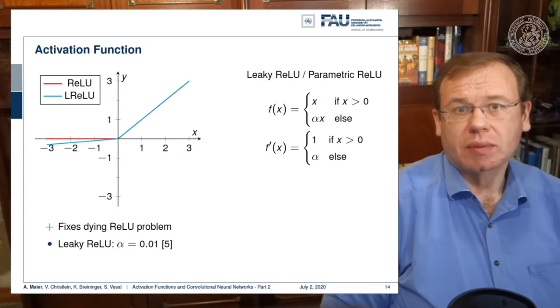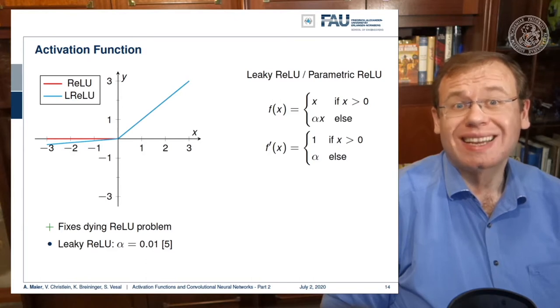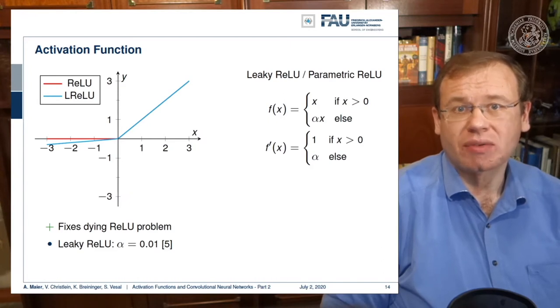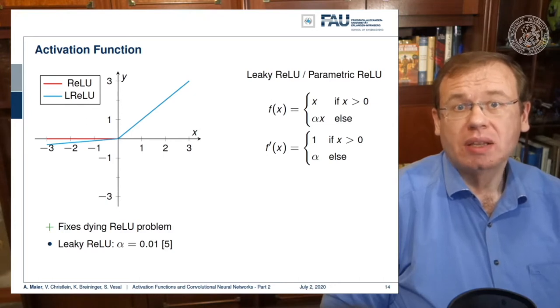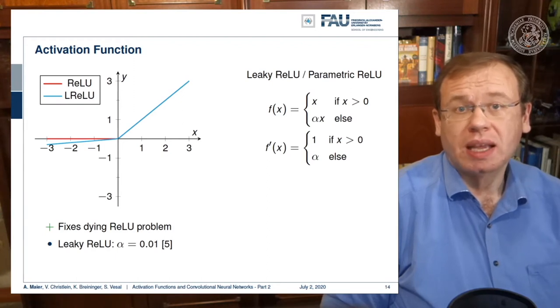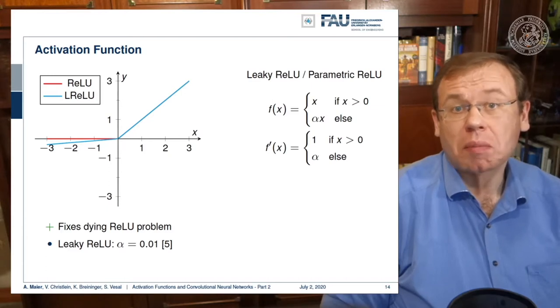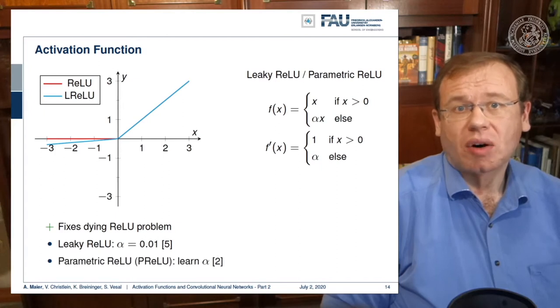One way to alleviate the problem is already using not just a ReLU but something that is called leaky or parametric ReLU. The approach here is that you not just set the negative half space to zero but you set it to a scaled small number. So you take alpha times x and you set alpha to be a small number. Then you have a very similar effect as the ReLU but you don't end up with the dying ReLU problem as the derivative is never zero but it's alpha.